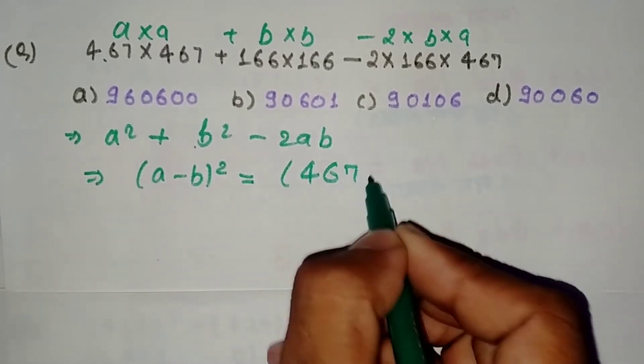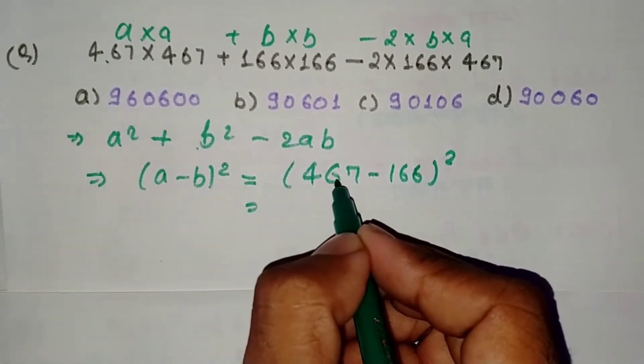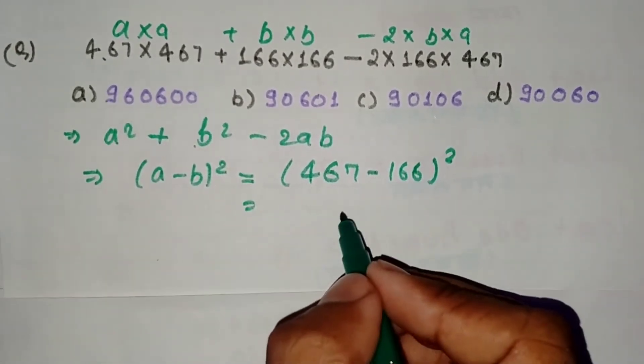So (467 - 166) whole square. The question asks for the last digit. The last digit is...